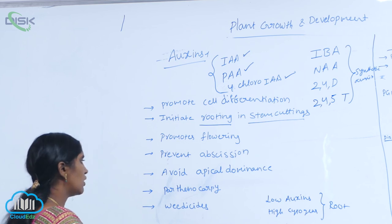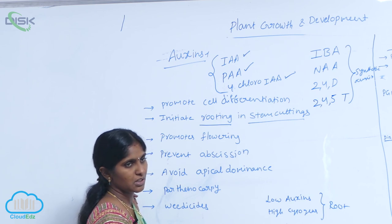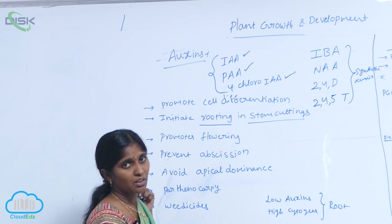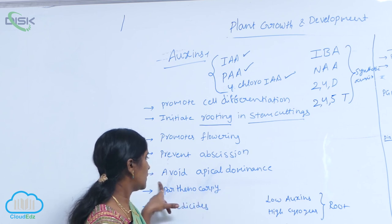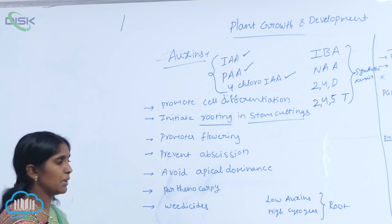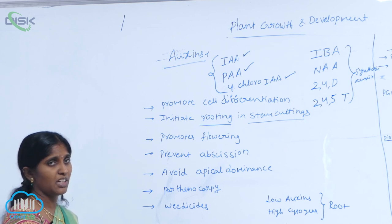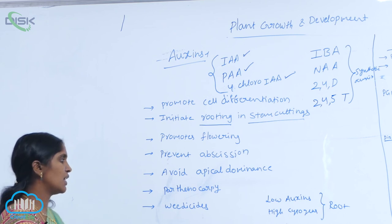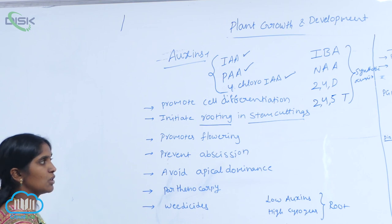Parthenocarpy means fruit formation without fertilization — fruits are artificially formed from the ovules without fertilization, and this is promoted by auxins. It is a commercial and horticultural application. Additionally, the majority of synthetic auxins such as 2,4-D and 2,4,5-T are used as weed sites (herbicides). These are the biological applications of auxins.